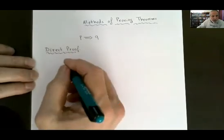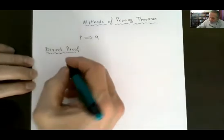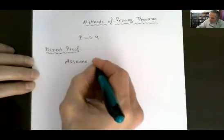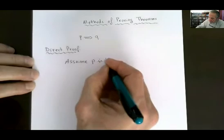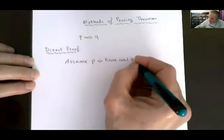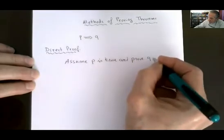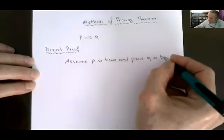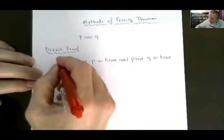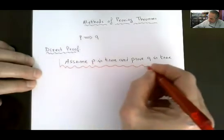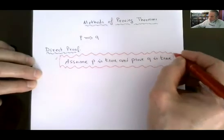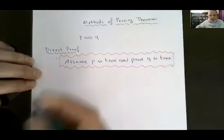So what you do: you assume p is true, and you prove q is true. So that's how direct proof works. You assume p is true and you prove q is true.